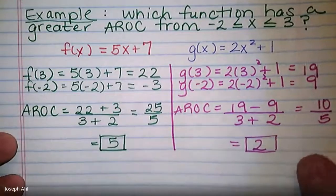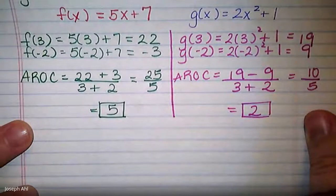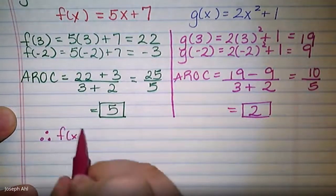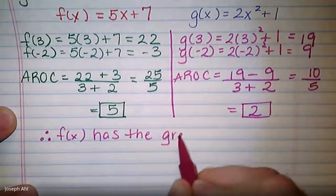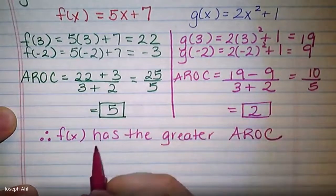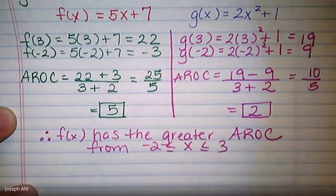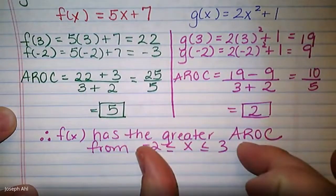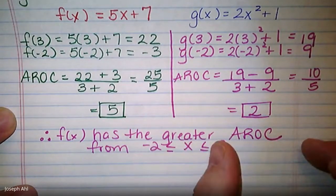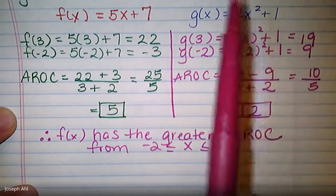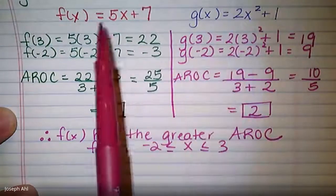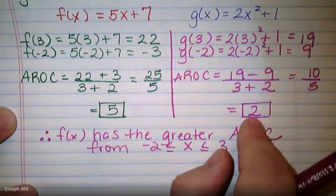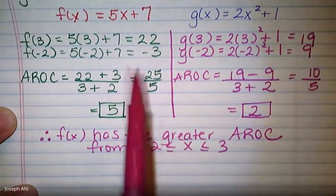Once I calculate both, the conclusion is that f(x) has the greater average rate of change over the interval from negative 2 to 3 — though this can change if we adjust the interval. Since f(x) is linear and g(x) is quadratic with a parabola shape, if we looked at the average rate of change from, say, 10 to 15, parabolas grow much faster and steeper after a certain point than a linear function. So g(x) would eventually surpass f(x), but for this specific interval, f(x) wins out.